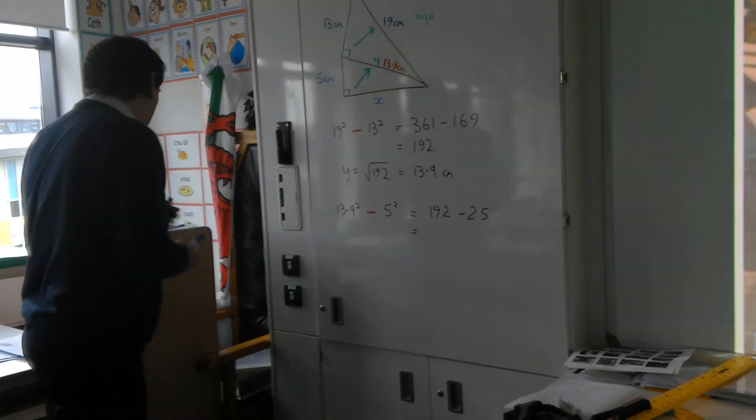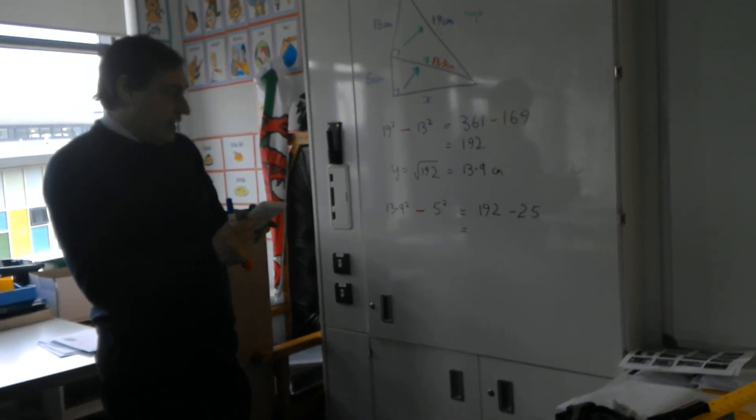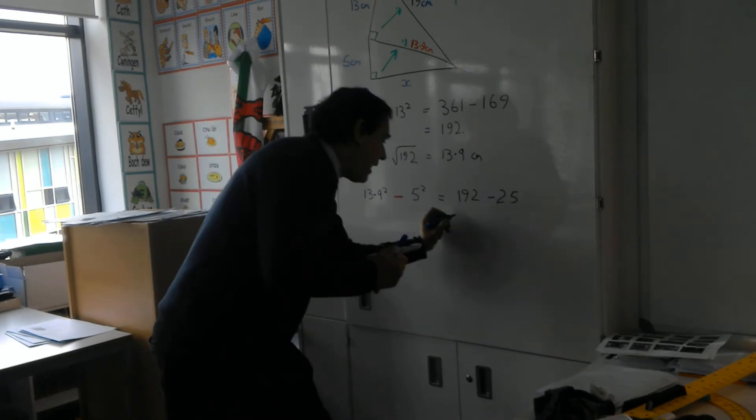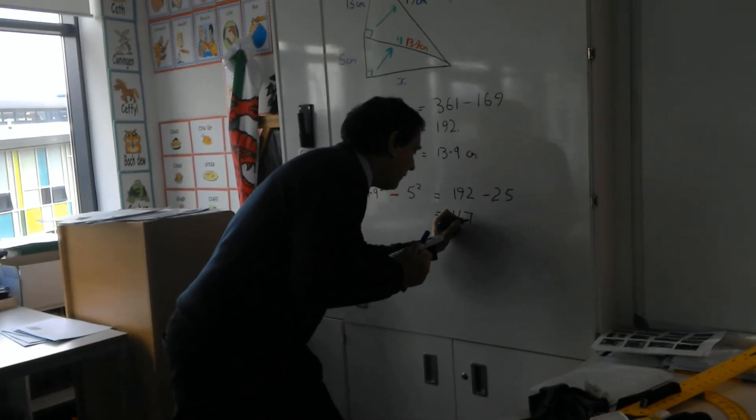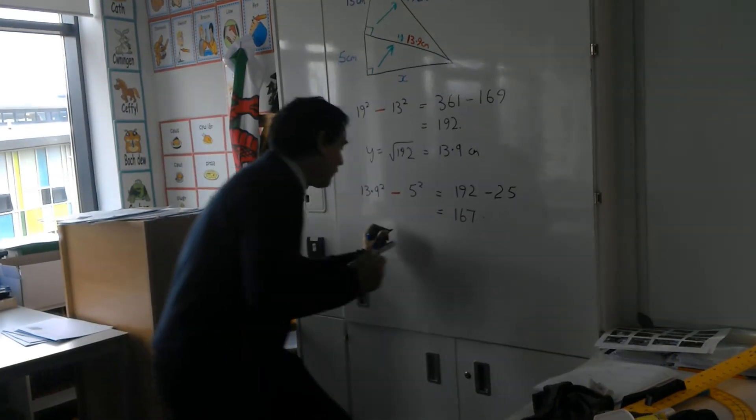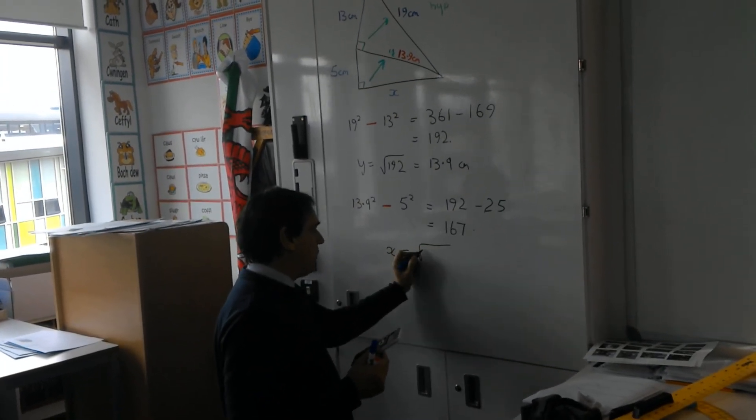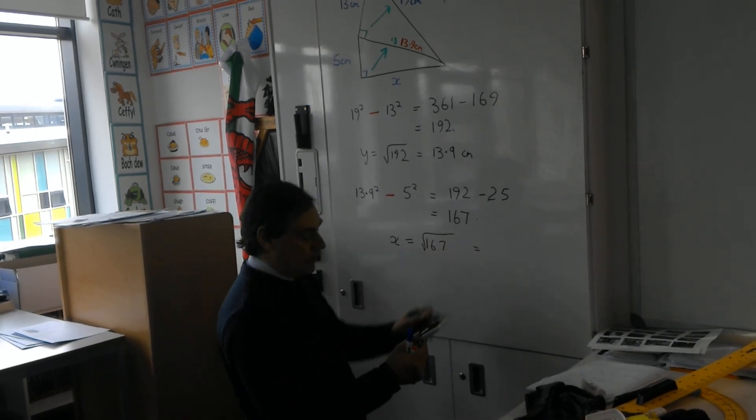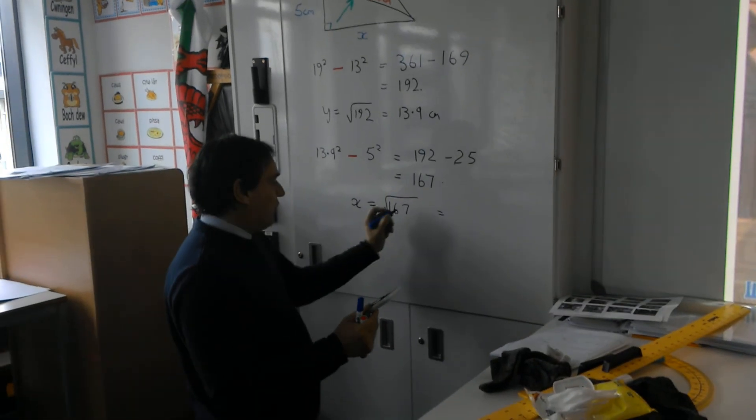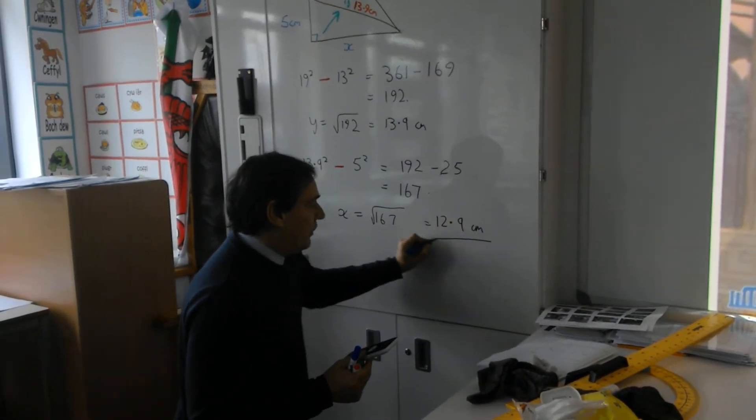I'm going to work that out in the calculator. So 192 take away 25, that gives me 167. So to find out what x is, I've got the square root of 167. So x is the square root of 167. Square root button on the calculator. And that gives me 12.9 centimetres.